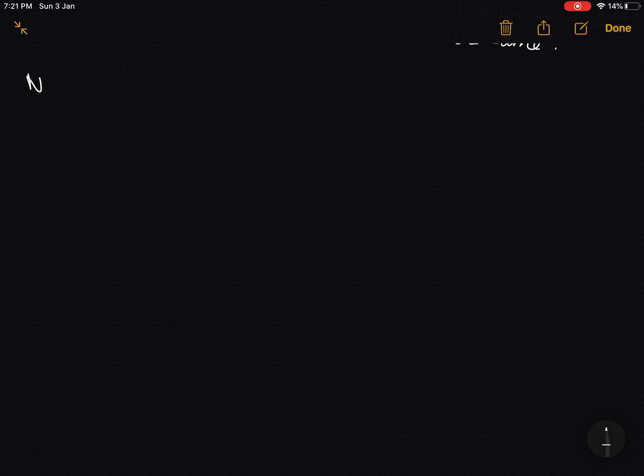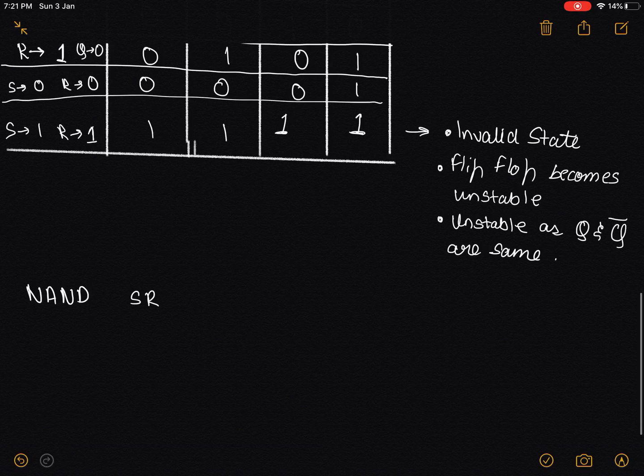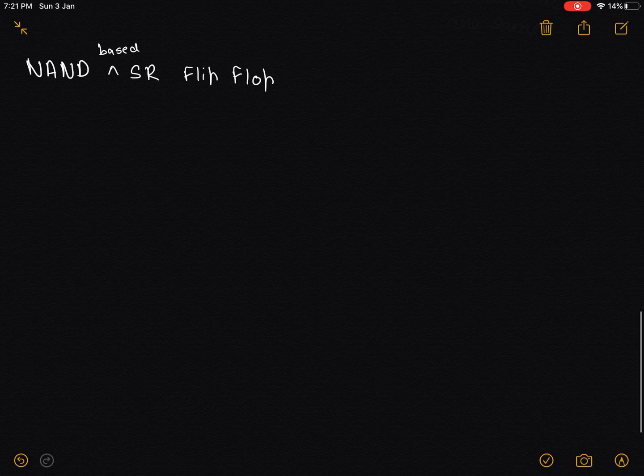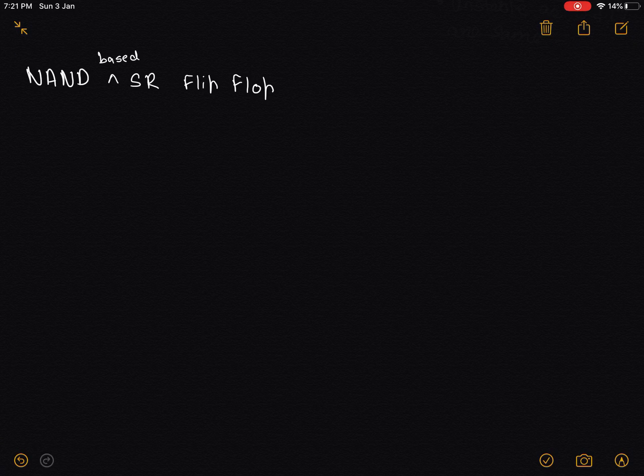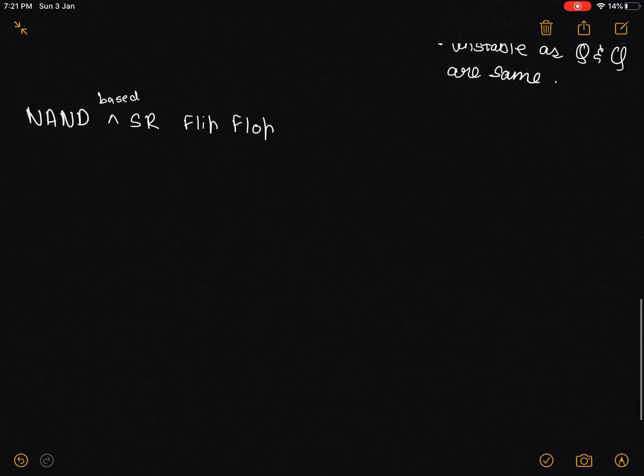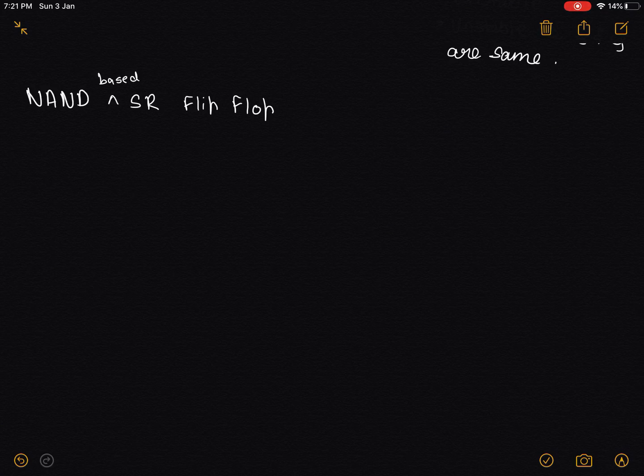Now the next is the NAND-based S and R flip-flop. So in NAND-based SR flip-flops, of course, we use a NAND gate instead of a NOR gate. It's the exact same thing, but instead of the NOR gate over here, we will be using a NAND gate.